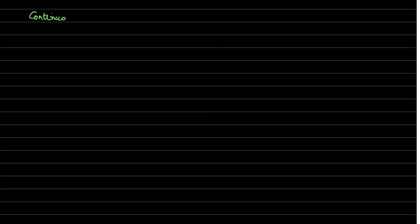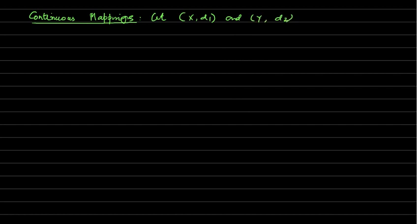Continuing from the previous lecture on continuous functions, let's discuss continuous mappings. Let X and Y be metric spaces with metrics d1 and d2.